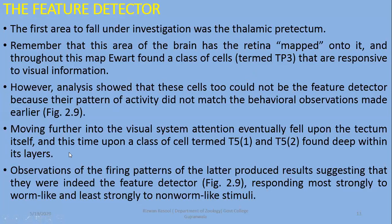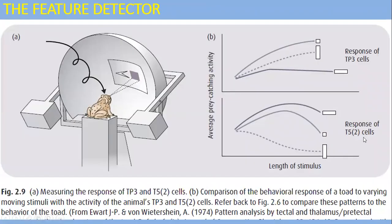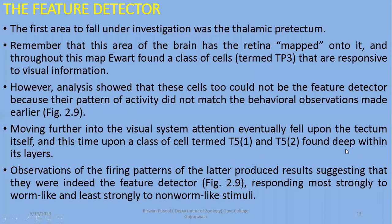The exact analysis is actually done on T5 cells. Moving further into the visual system, attention fell upon the tectum itself and a class of cells termed T5 — found deep within its layers, which were the middle cells. Observation of the firing patterns of T5 cells produced results suggesting that they were indeed the feature detector, as their response to worm-like shapes was the most positive.